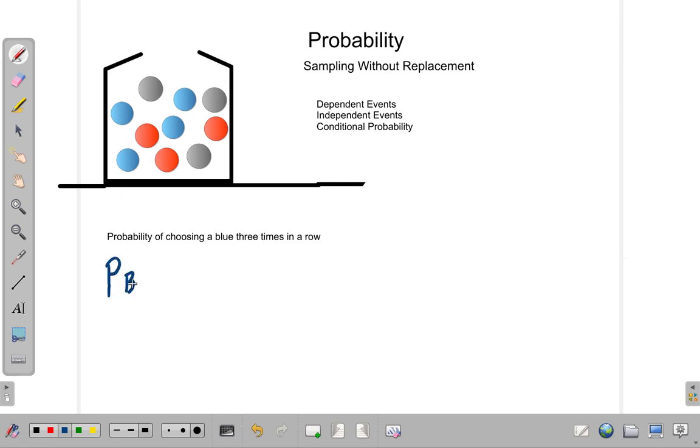Probability of B for blue is equal to... Now, upon the first pick is going to be you have four blue out of ten balls. So, that's the probability of picking a blue the first time.